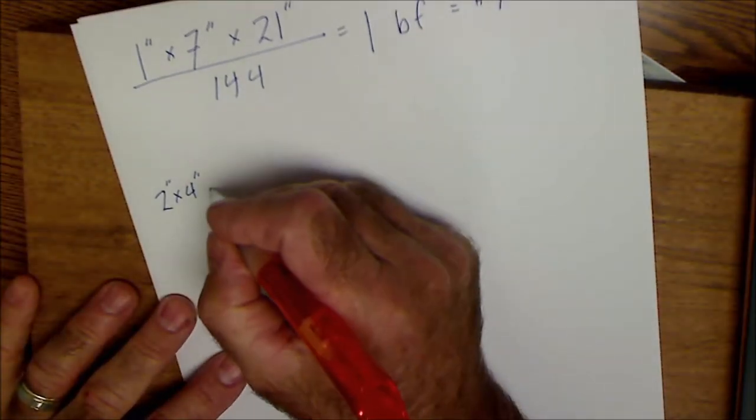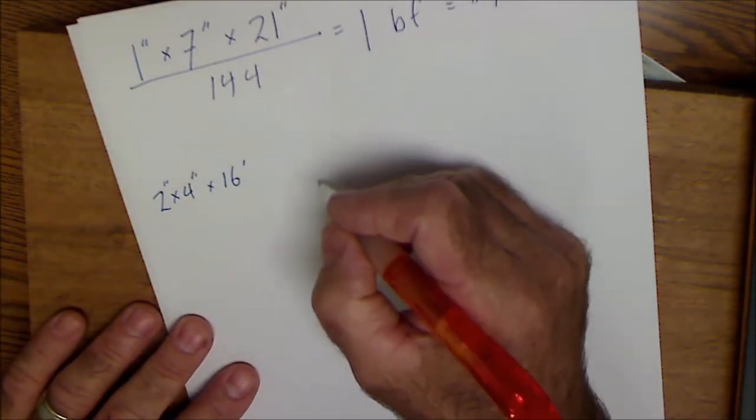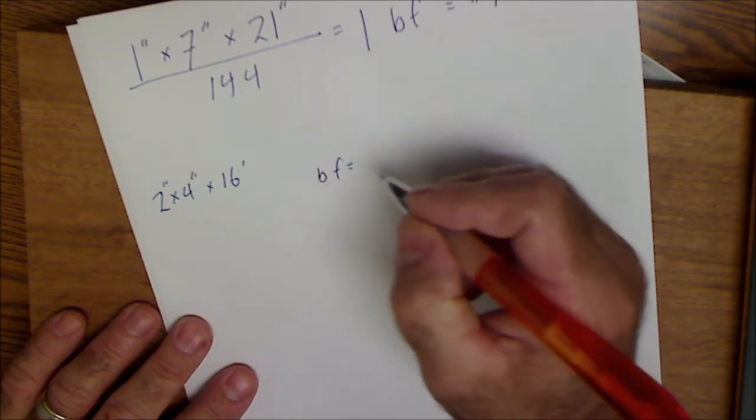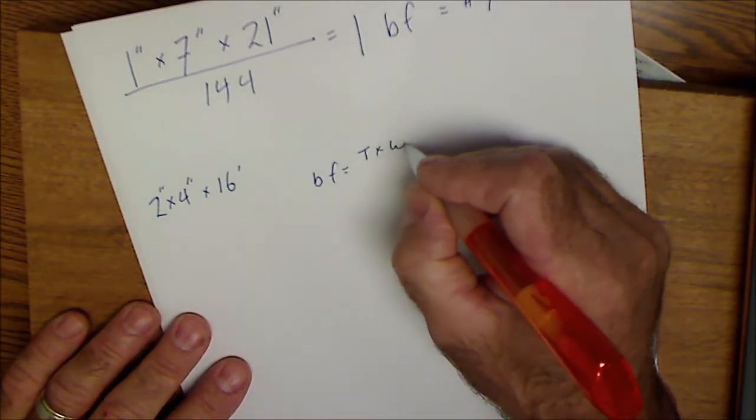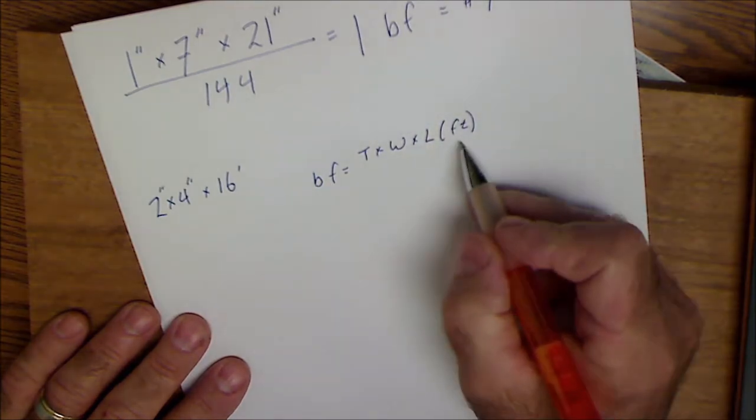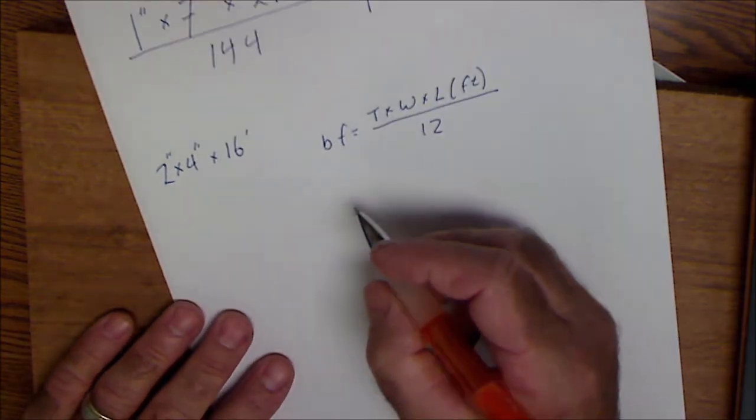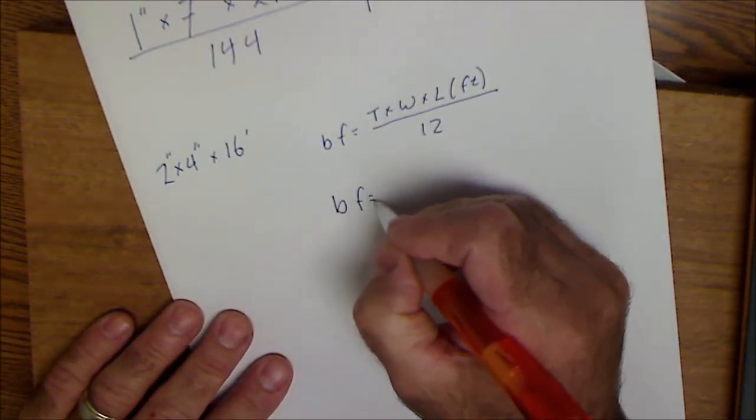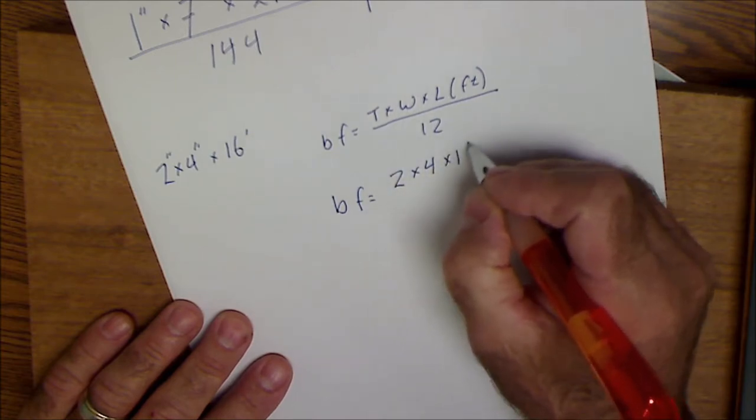And let's say this is 16 feet long. Now I'm going to do the board foot equation. Thickness times width times length. And the length is going to be in feet. If the length is in feet, now I divide by 12. So the board feet here is going to be the two inches by four inches by 16 feet. And now I'm going to divide by 12.